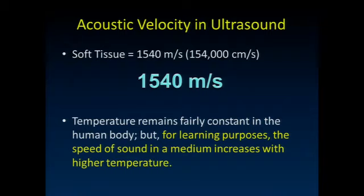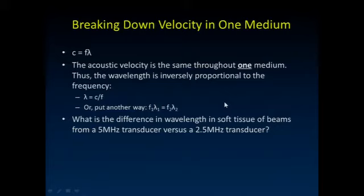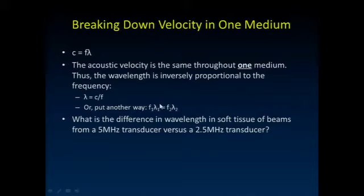Temperature plays a small role in sound speed — the speed of sound increases at higher temperatures, though this isn't critical for us. In a single medium, the speed of sound equals frequency times wavelength. Since acoustic velocity stays the same throughout one medium, wavelength is inversely proportional to frequency. If we vary the transducer frequency, the wavelength must vary accordingly.